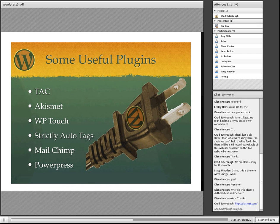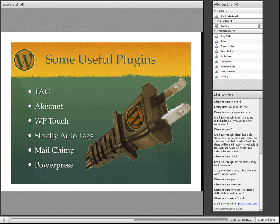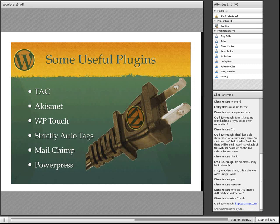Another plugin I use is Strictly Auto Tags. Tags tell the internet — things like Google — that you exist and what your content is about. Strictly Auto Tags pulls that out of the text you've written, tags it, and also gives you a window where you can pick often-used tags. That's just a way of making your website a little more searchable — a little more optimized, as they say, for search engines.